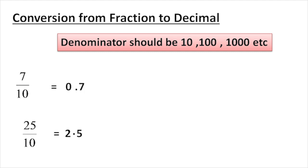Please remember: for the question 235 divided by 10, the denominator is 10. If you get 235 with denominator 10, you place the decimal to get 23.5.